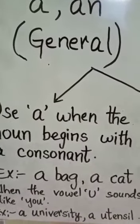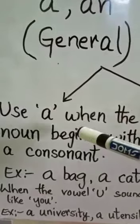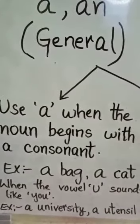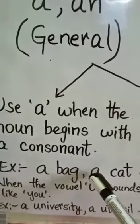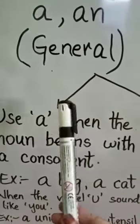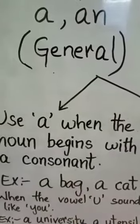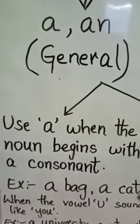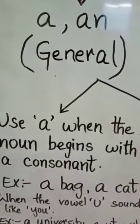And children when do we use A? We use A when the noun begins with a consonant. So what are the examples here? Examples are a bag, a cat, a pen, a marker, a duster. So these are the examples of usage of A.